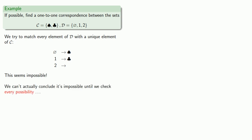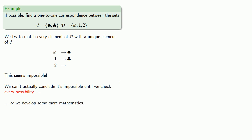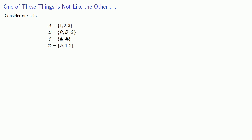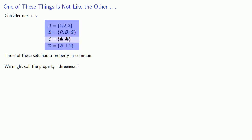Actually, we can't conclude it's impossible until we check every possibility, or we develop some more mathematics. Let's consider our sets again — A, B, C, and D. A and D do have some elements in common, but other than that the sets have no overlap. In fact, three of these sets share a property in common. We might call it property threeness — these sets have three elements, and this one does not.